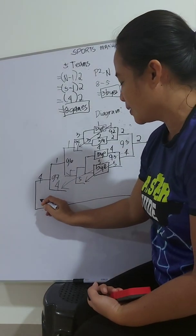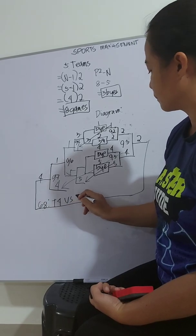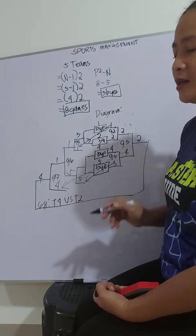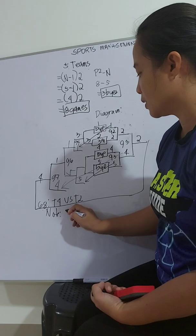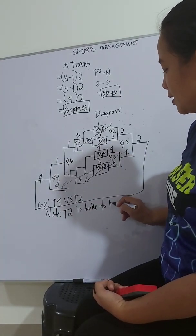To be played between team 4 and team 1. This is our game 8. So we have this. Team 4 versus team 2. Note. Team 2 must be beaten twice. So see? As simple as that.